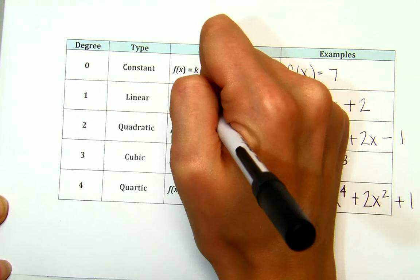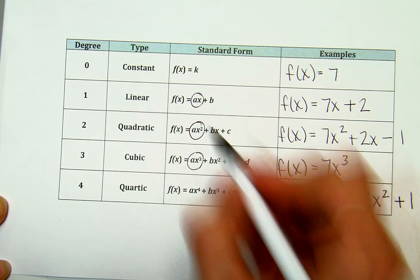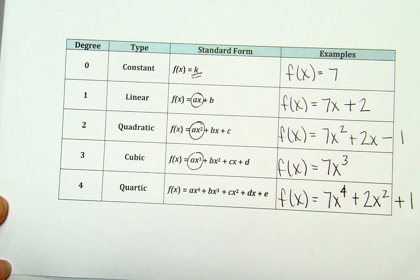And for linear, you have to have the variable x. And for a constant, you just have a number. So in this example, f(x) = 7x³ is actually a cubic function. It doesn't have to have any other terms behind it.